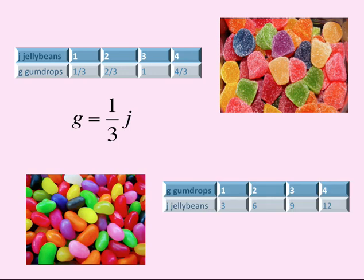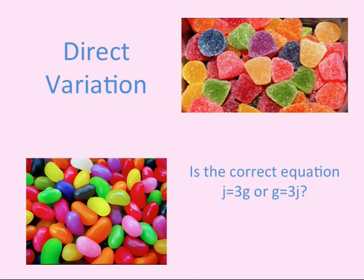If, on the other hand, I change my IO table such that G is now the independent or input variable and J is the dependent or output variable, it would change the way things look and my equation would also change. It's an inverse of the other equation. This one is J equals three times G. We can see that the first one here is correct and the second one would not quite work.